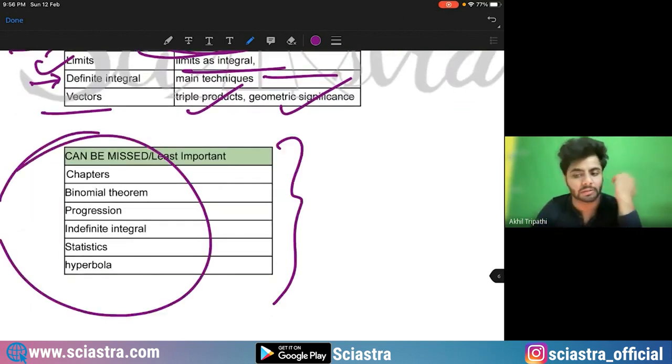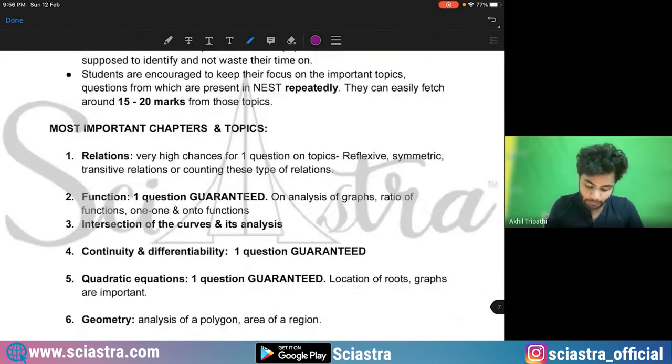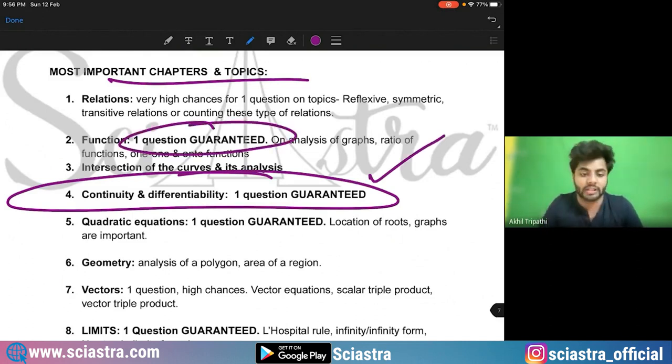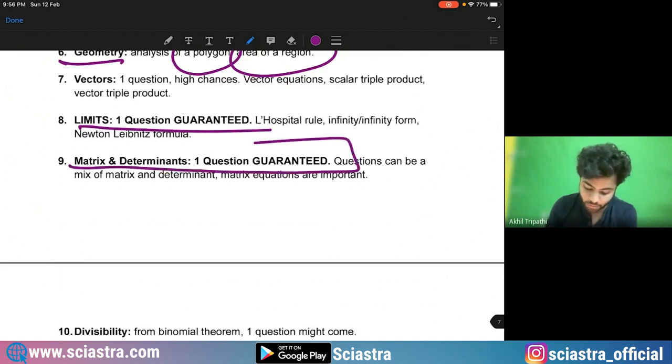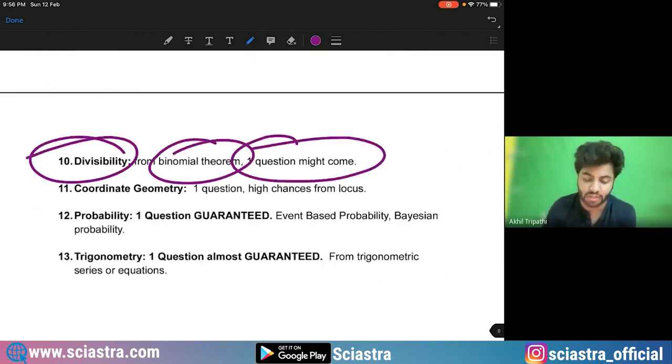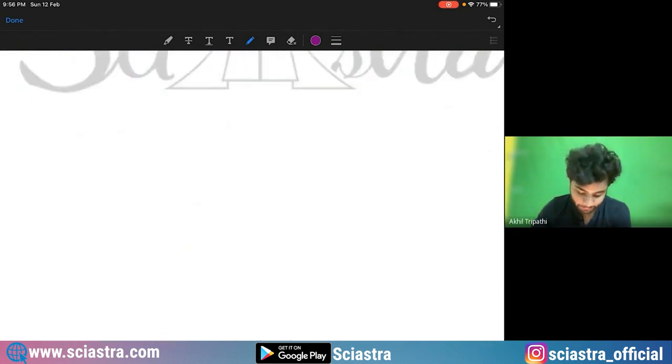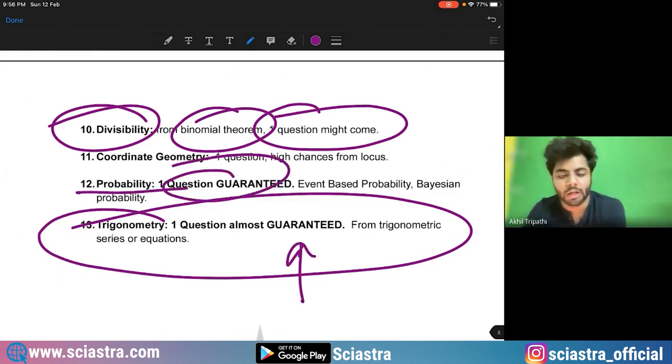The least important chapters or less probable chapters are again same. We have told in detail about 90% of the questions were already predicted and all the most important topics and chapters. If you see from continuity and differentiability one question is guaranteed, from functions one question is guaranteed, from intersection of the curve and analysis one question is guaranteed. Geometry, analysis of polygon area under curve or of a region is important. The limits one question guaranteed, matrices and determinants one question guaranteed from divisibility. Binomial theorem one question might come. As I told you these are less probable. Binomial theorem is less probable but one question might come in next exam. Coming to trigonometry, one question almost guaranteed here. Probability again one question guaranteed. So these were the most important topics and chapters for IAT and NEST 2023.